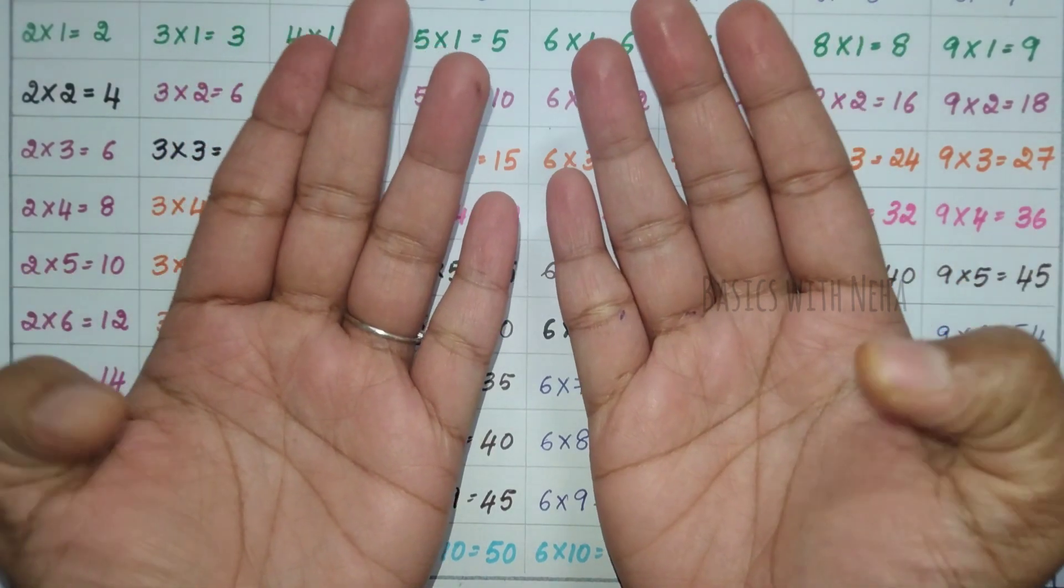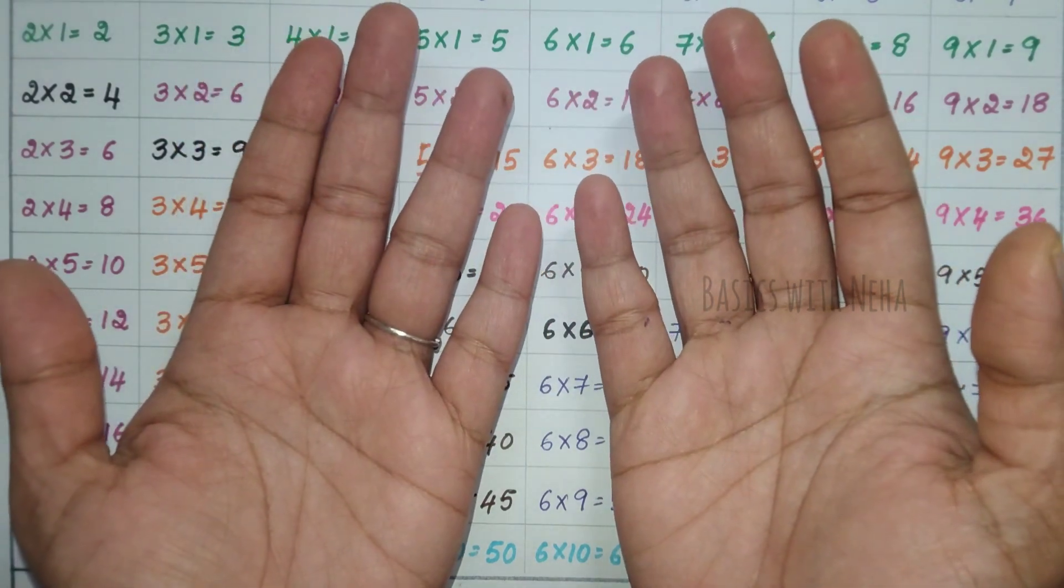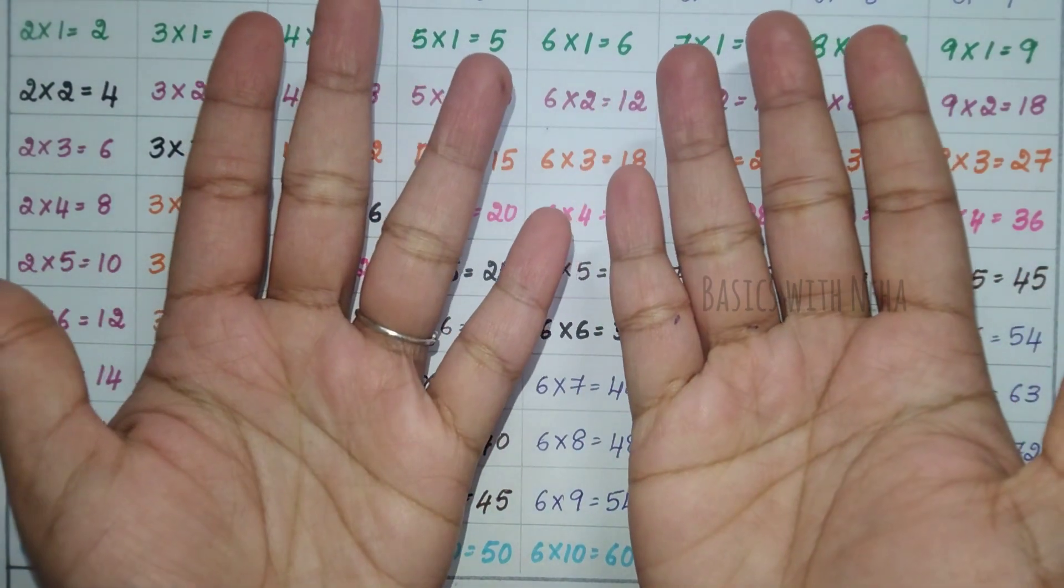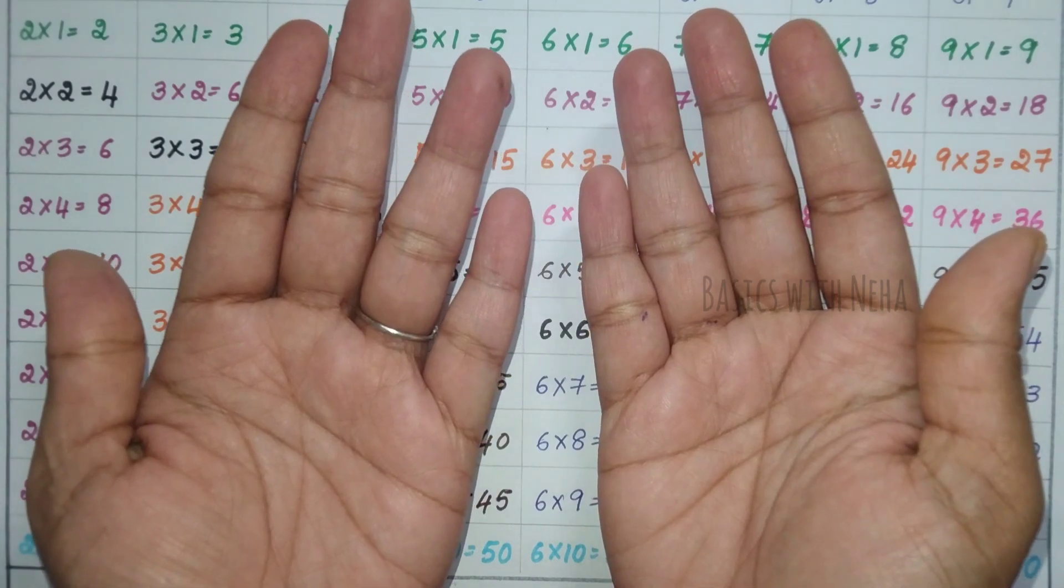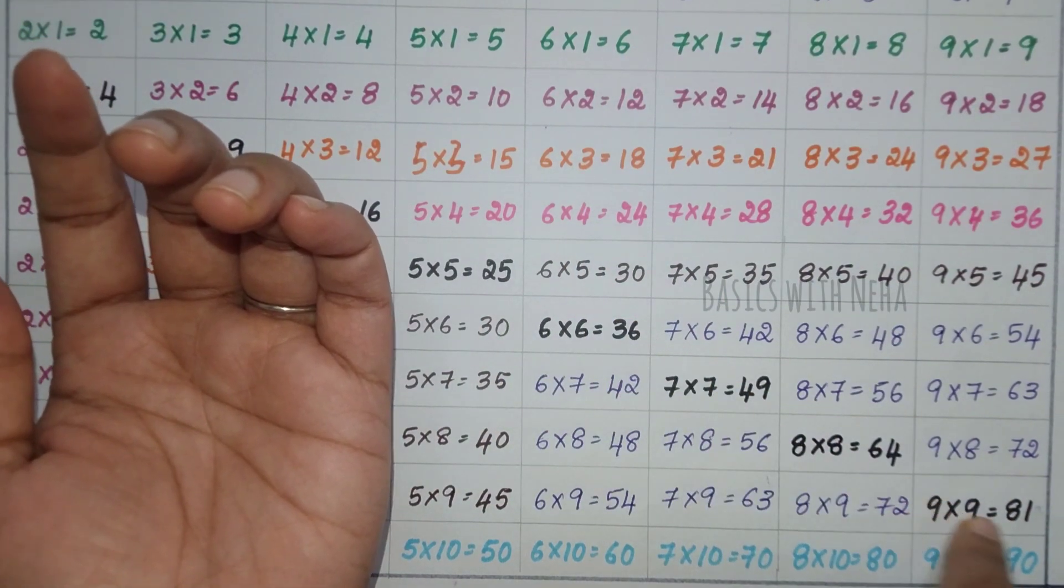Considering this to be 6, 7, 8, 9 and 10. Now, how do we start to dodge the table? Only from here, from 6×6s to 9×9s.